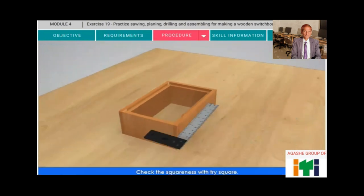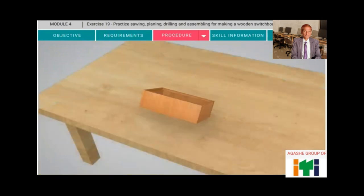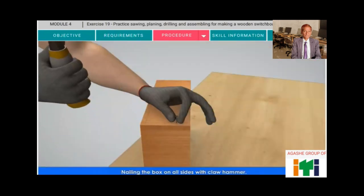Check the squareness with tri-square. Nailing the box on all sides with claw hammer.